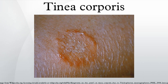Prevention: because fungi prefer warm, moist environments, preventing ringworm involves keeping skin dry and avoiding contact with infectious material. Basic prevention measures include washing hands after handling animals, soil, and plants; avoiding touching characteristic lesions on other people; wearing loose fitting clothing; and practicing good hygiene when participation in sports involves physical contact with other people.